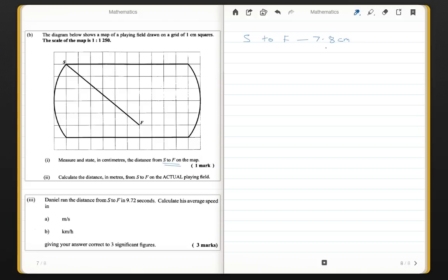Now, you have to transpose this into real world centimeters. To do that, you multiply by the scale, multiply this by 1250, and you should get your answer being 9750 centimeters in the real world. Part 2 wants us to convert the centimeters into meters. To convert centimeters to meters, you simply divide by 100. So, 9750 divided by 100 is going to give us 97.5 meters.